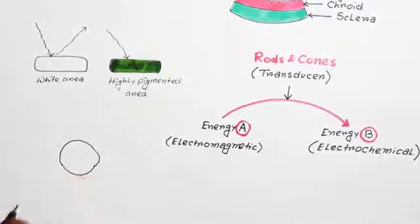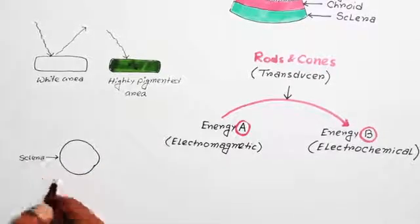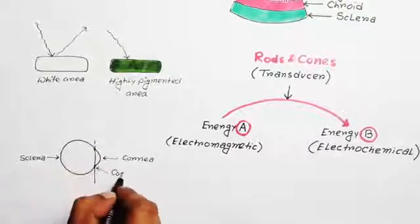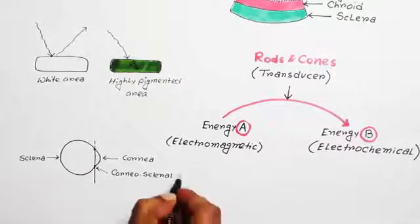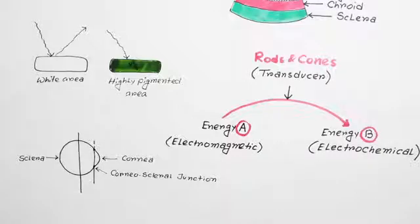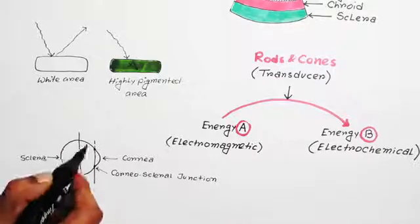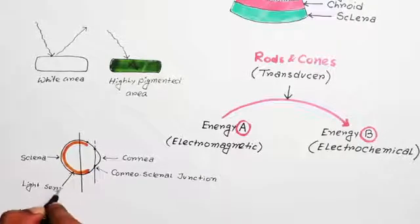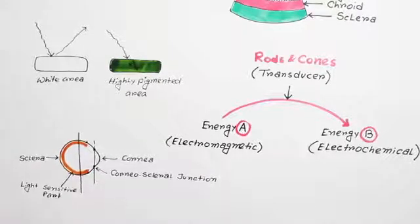Let me draw another diagram. This is sclera and this is cornea. So this portion is the corneoscleral junction and this is the coronal section. Actually, rods and cones extend from backward to forward and end somewhere in the middle of these two points. So, what does it mean? Only this portion of retina is sensitive to light, and the portion anterior to this part is not sensitive to light.